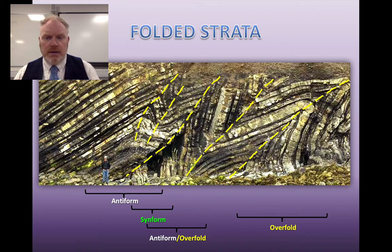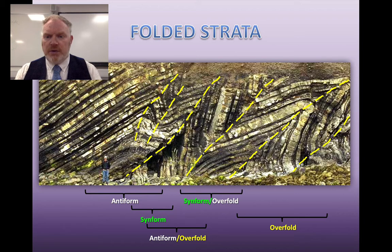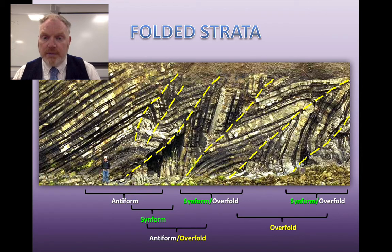We've got another clear axis there — this one is a syn-form or an overfold, depending on what you think that limb is. And finally, over in the corner there, we have another fold axis, which again is a syn-form or an overfold. So we're getting anti-form, followed by syn-form, followed by anti-form, followed by syn-form, and so on. The one I gave you as an example we would describe as an anti-form or an overfold.